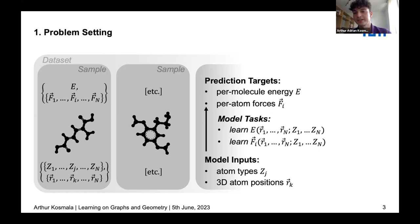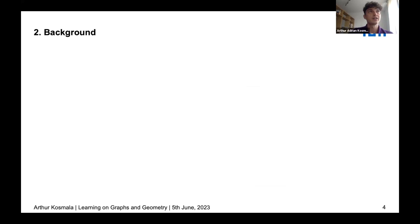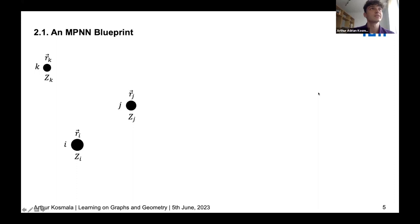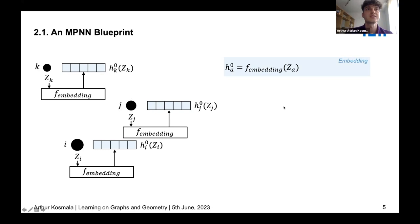Let's look briefly at how the models we consider look like. I'm considering the simple case where messages are passed between different atoms in the structure. Our type of models have our positions and atom types, and then we embed our atom types onto some high-dimensional vector — these are our atom embeddings. At the first step, we have just local atom-specific information, with no interactions yet.